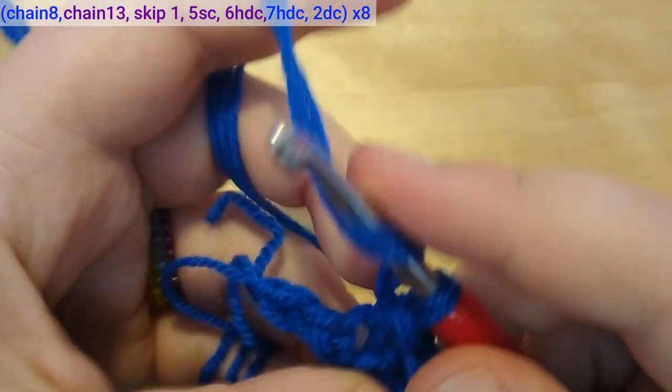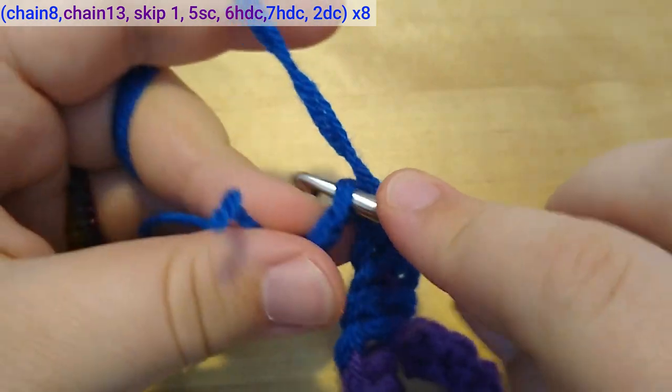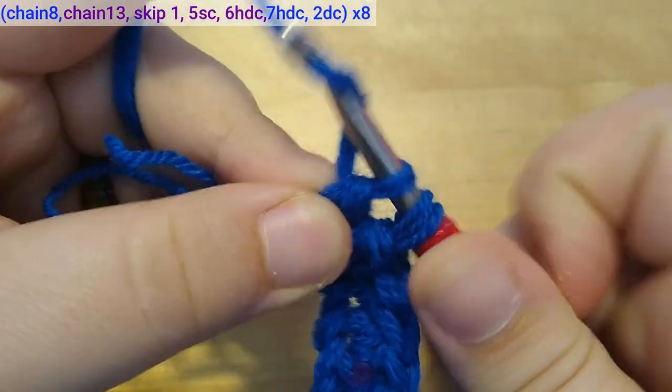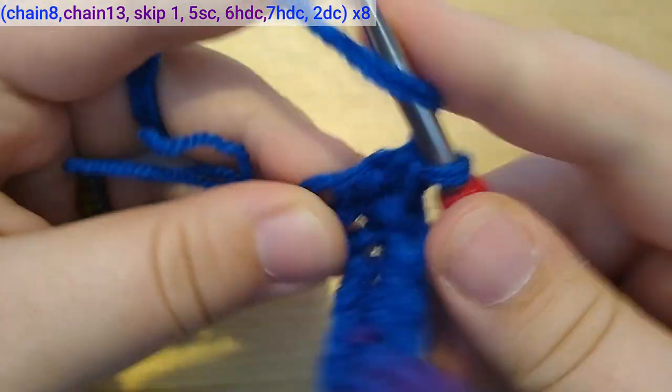After cutting the ends flush and finishing the 7 blue half double crochets, I'm making 2 double crochets into the last 2 stitches, finishing off the first tentacle.